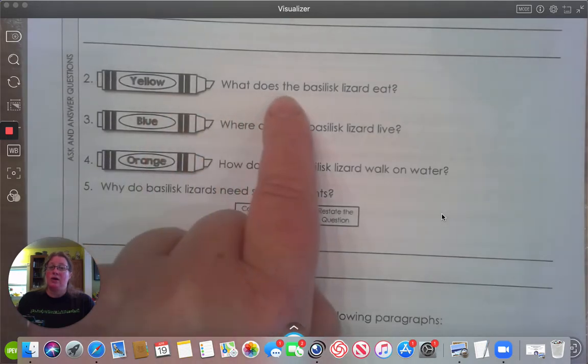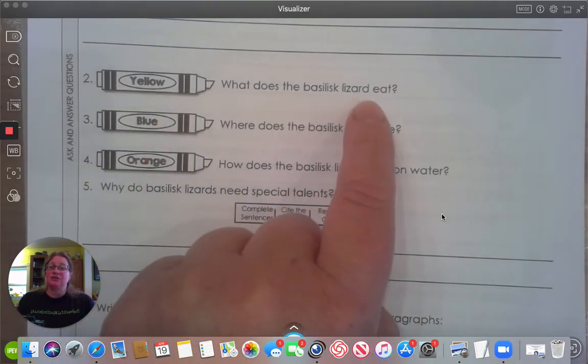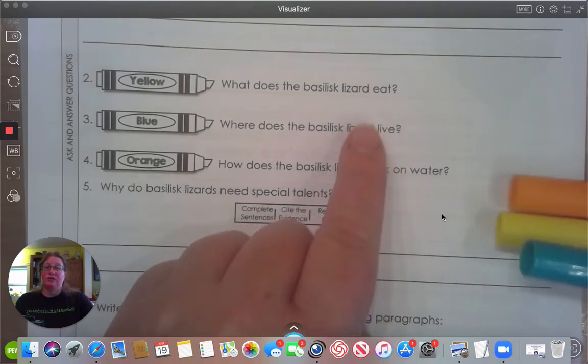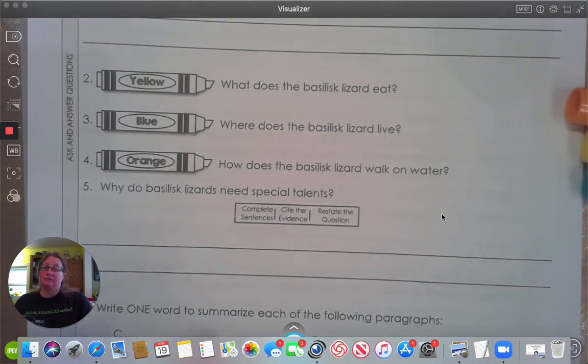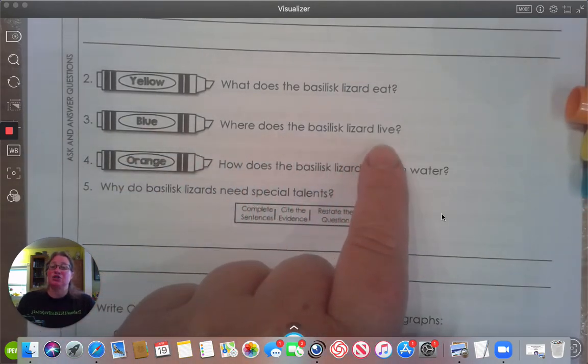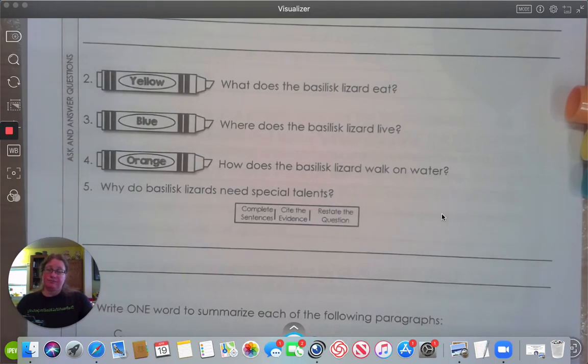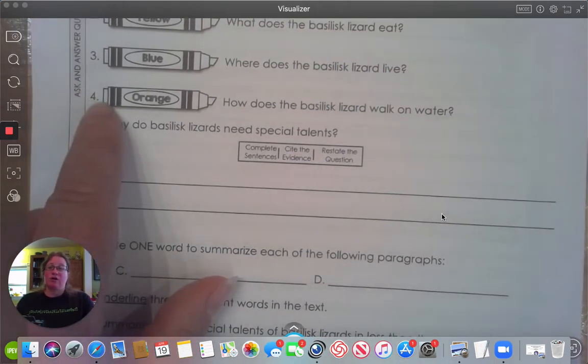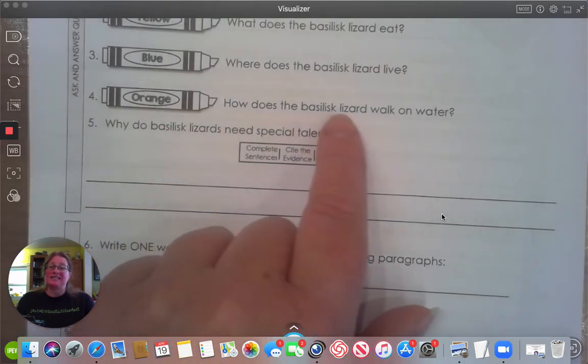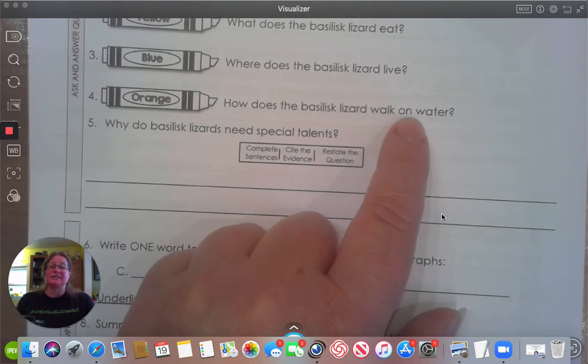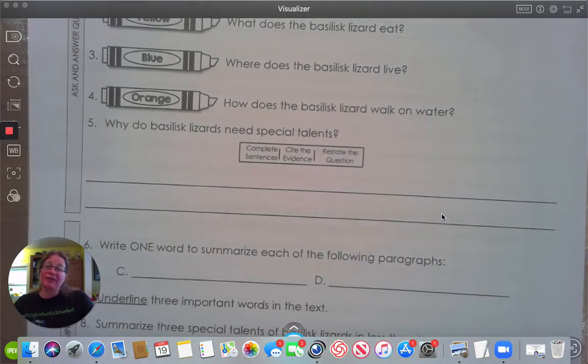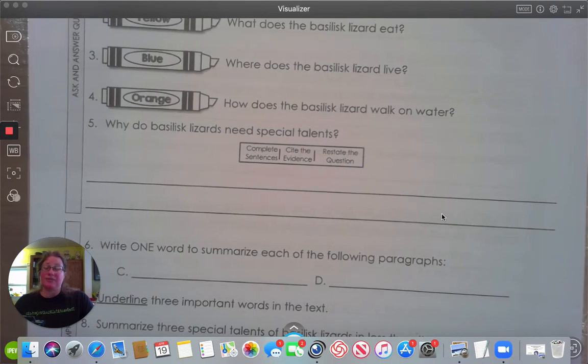Number two. Yellow highlight. What does the basilisk lizard eat? Don't forget, you will need your three colored markers. Blue. Where does the basilisk lizard live? Four. Highlight an orange. How does the basilisk lizard walk on water? Remember, you are going to go find those answers and highlight them in the appropriate colors.